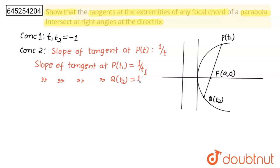Suppose both tangents intersect at some point, and the question says they intersect at right angles — suppose this is 90°. Then the product of their slopes will be minus 1. The product of slopes is (1/t₁) × (1/t₂) = 1/(t₁t₂). And since we know t₁t₂ = −1, this becomes −1. So the 90° condition is confirmed and correct.